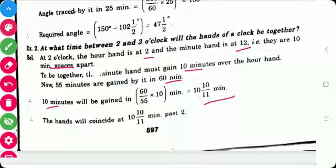So, the hands will coincide at 10 and 10 by 11 minute past 2. After 2 means at past 2, 10 and 10 by 11 minute, the minute hand and hour hand are together.